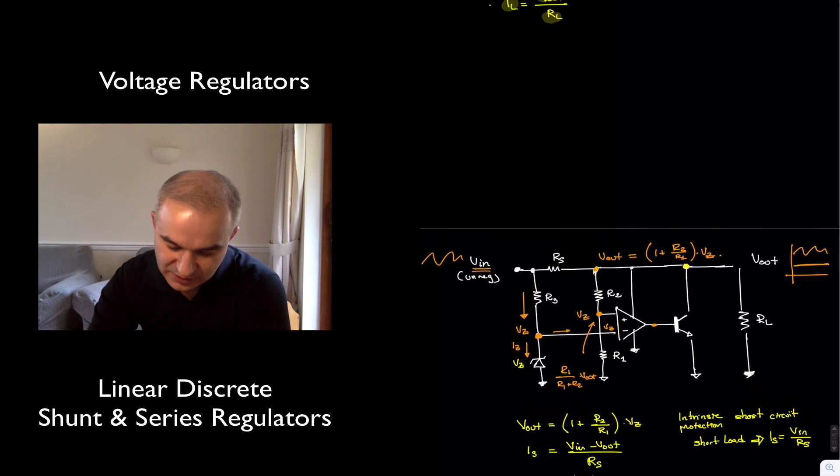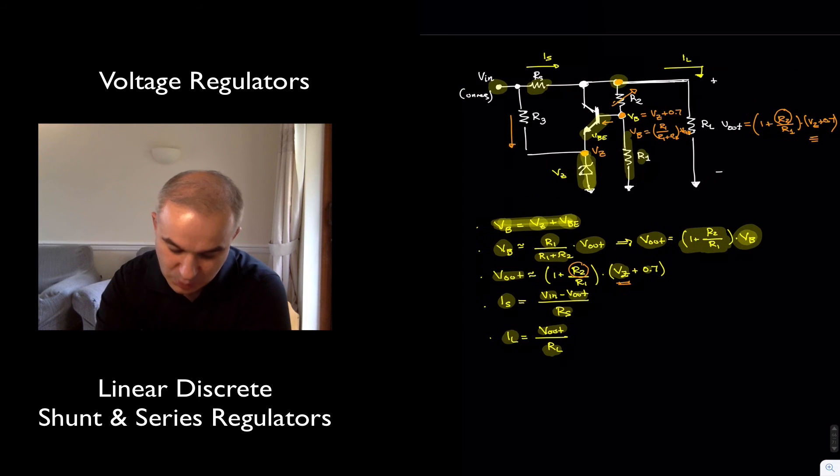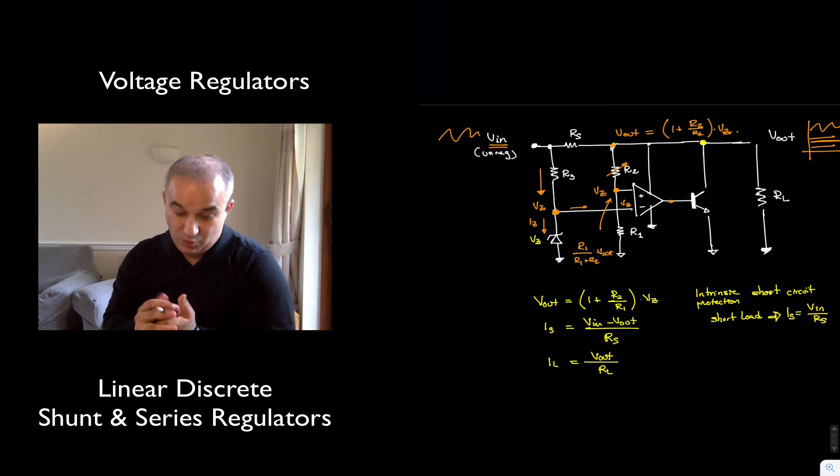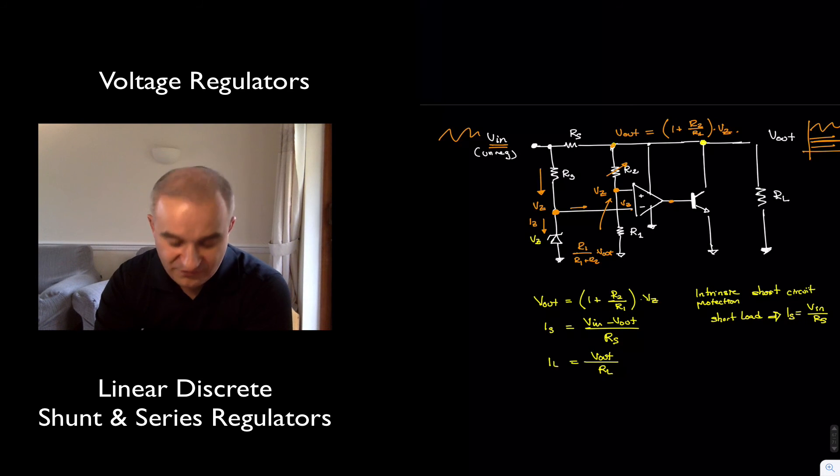So, similar to the design that we did in the previous video, which is this one, where the output also could be, once we establish a Zener voltage as a reference, we are able to control the output and amplify it. So, this is the same thing here, so we can have R2 to now create a power supply for any voltage we want, or a steady voltage, fixed voltage, that is an amplified version of the Zener voltage.